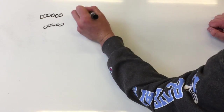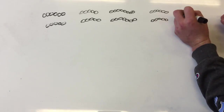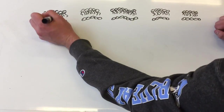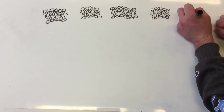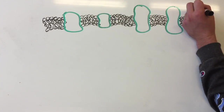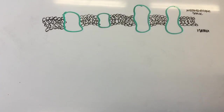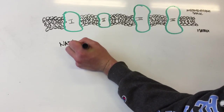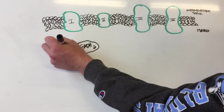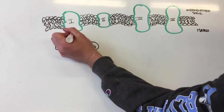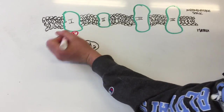The electron transport chain is made up of a series of proteins and organic molecules embedded in the inner membrane of the mitochondria. The important parts of the chain are complex 1, 2, 3, and 4. The electron transport chain is initiated by NADH and FADH2 molecules, which donate high energy electrons to complexes 1 and 2.